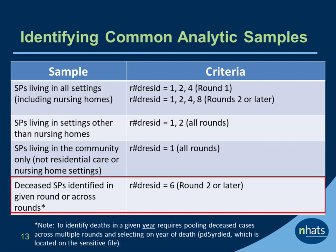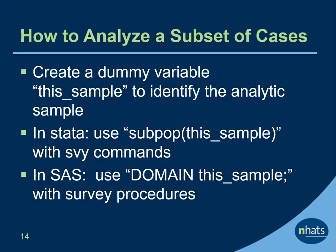To find all cases dying in a given year, researchers need to pool deaths across multiple rounds and use year of death from the sensitive file to further restrict the file. Because NHATS has a complex sample design, we recommend using survey design-adjusted commands to analyze these data. As such, rather than dropping cases to form an analytic sample, users should create a dummy variable to identify the analytic sample and use this variable with the appropriate subpopulation option. In Stata, use this variable in the subpop option in SVY commands. In SAS, use this variable in the domain statement with survey procedures.